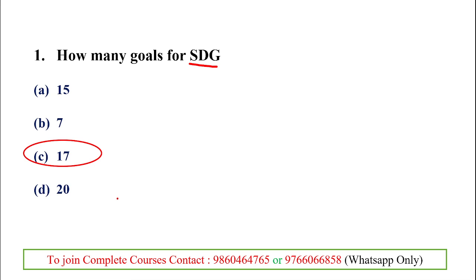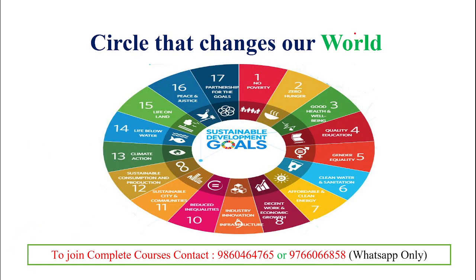A chart shows all 17 goals in a circle — the idea being that changing a country changes the whole world. The goals range from No Poverty to Partnership for the Goals. For an underdeveloped country to achieve development, these are the major objectives: No Poverty, Zero Hunger, Good Health, Quality Education, Gender Equality, and Partnership for the Goals — these form the backbone of the SDG.